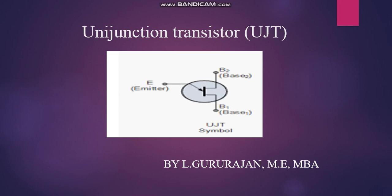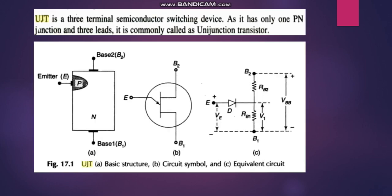UJT stands for Unijunction Transistor. The name 'uni' means single, so it has only a single PN junction. It is a three-terminal semiconductor switching device with three leads: Base 1, Base 2, and the Emitter.